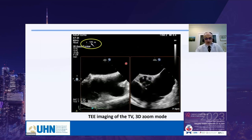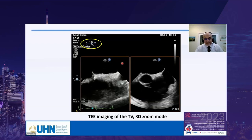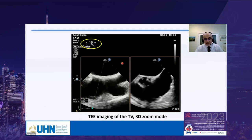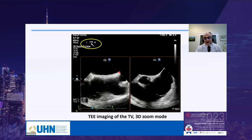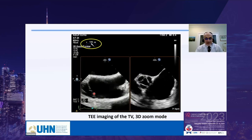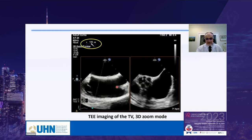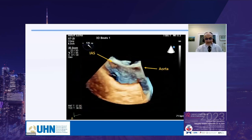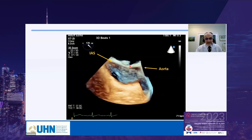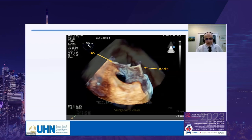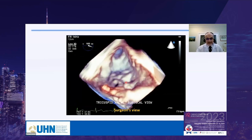How do I acquire the 3D TEE image of the tricuspid valve? The guideline suggests 0 to 30 degrees, but I believe each valve should be imaged in a plane perpendicular to it. The view that is perpendicular to the TV is approximately 120 to 130 degrees. I start with this view in 3D zoom mode, which yields an image with the IVC on one side and the aorta on the other. After rotating the image, we can identify the valve clearly — this is a secondary TR case, which is why leaflet definition is better.